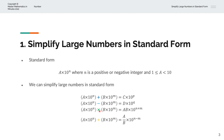Thirdly, consider the case where we multiply two large numbers in standard form. We'll multiply a and b to get ab, and 10 to the power of n multiplied by 10 to the power of m equals 10 to the power of n plus m. Lastly, for division, we divide a by b to get a over b, and 10 to the power of n divided by 10 to the power of m is 10 to the power of n minus m.